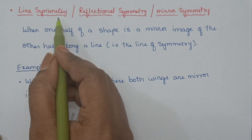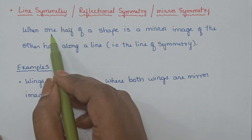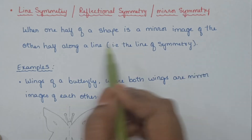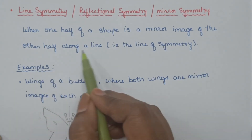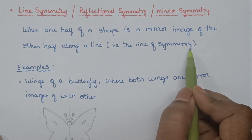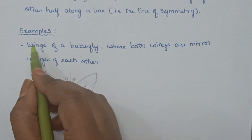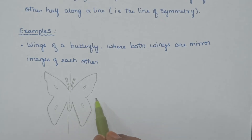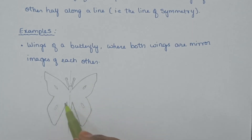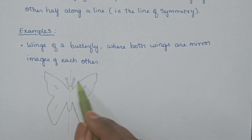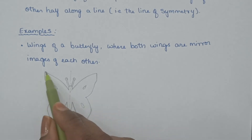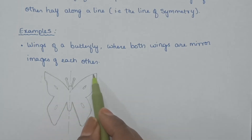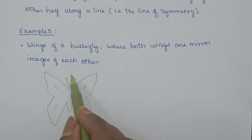Line symmetry. A shape exhibits line symmetry if one half of a shape is a mirror image of the other half along a line. The dividing line is called the line of symmetry or mirror line. For example, the wings of a butterfly — both wings are mirror images of each other. Line symmetry is related to reflection, that is flipping. The reflected image is of the same size and shape but reversed.